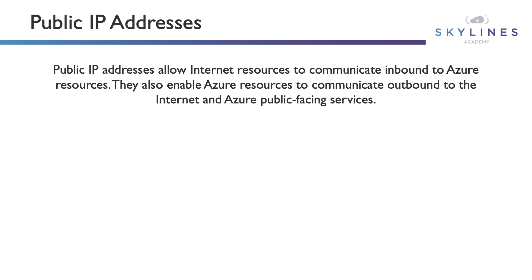Let's talk about public IP addresses. Public IP addresses allow internet resources to communicate inbound to Azure resources. They also enable Azure resources to communicate outbound to the internet and Azure public facing services. You may be wondering if you can communicate outbound anyway — yes, absolutely. We use source NAT, so when you have a VM in a virtual network it can talk out to the internet using network address translation. But if you assign a public IP address, you can also communicate out through that public IP address if you want to.